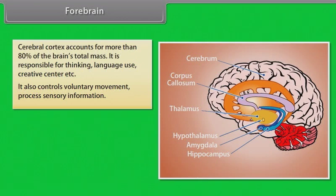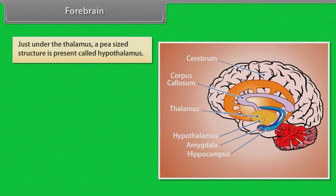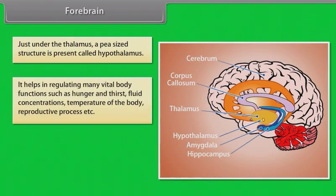The thalamus is a large mass of grey matter buried under the cerebral cortex. It consists of a pair of egg-shaped structures that route information from sense receptors to the processing centers of the brain in the cerebral cortex. Just under the thalamus, a pea-sized structure called the hypothalamus helps regulate vital body functions such as hunger and thirst, fluid concentrations, body temperature, and reproductive processes.